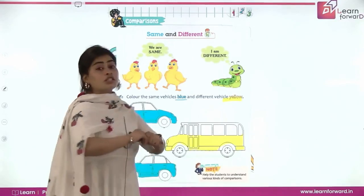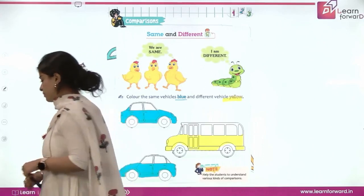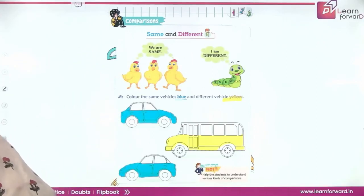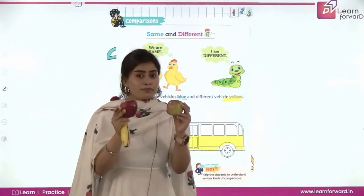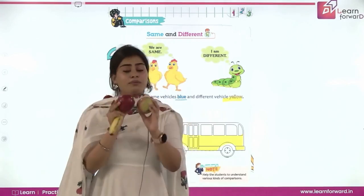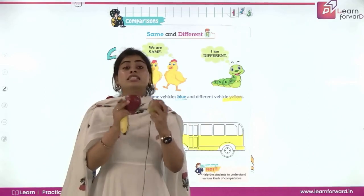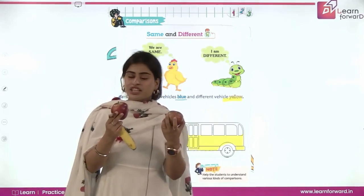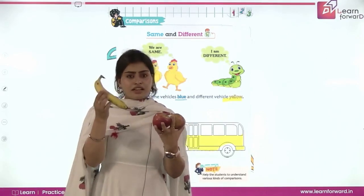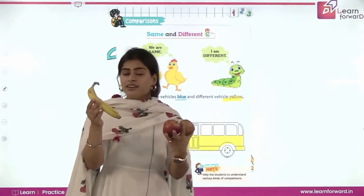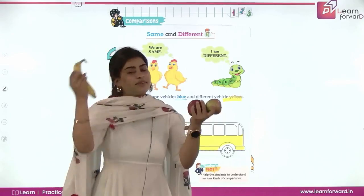This is the concept of same and different. Let me show you one more example. I have two apples — these are apples. These two apples are same; they are red in color, same fruit, same in size and shape. But when here comes a banana, it's different. This is not an apple, it's a banana — so this is different. Apples are same and the banana is different.